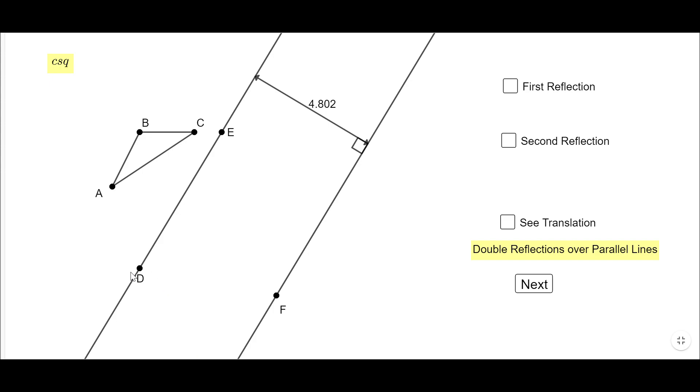If you notice, we have two lines, D-E and the line that goes through F. These two lines are parallel. We notice here a 90-degree angle and this is the distance between these two lines. And you have this triangle A-B-C.